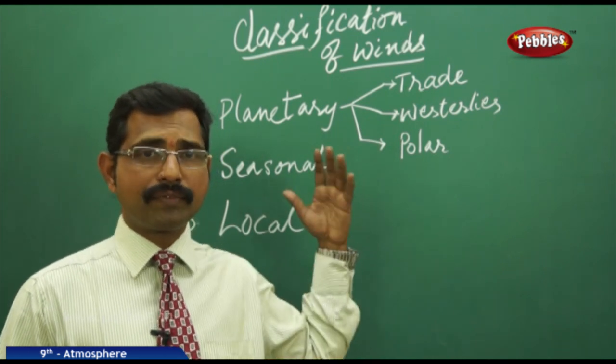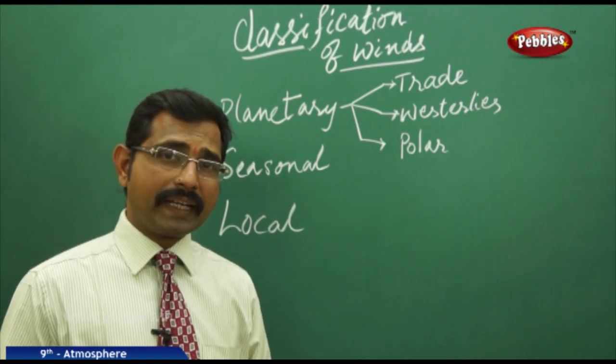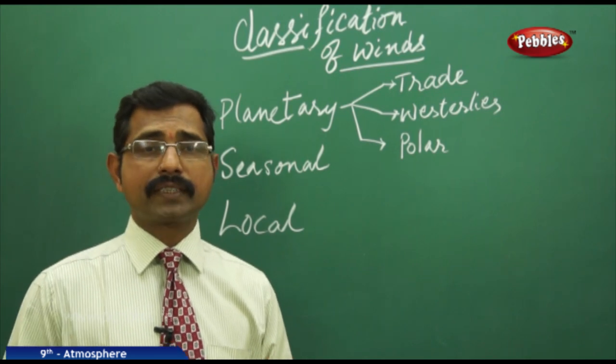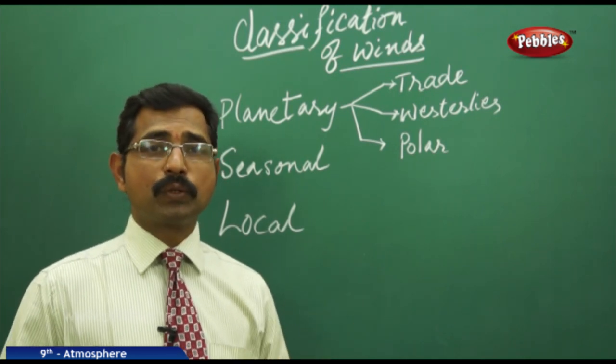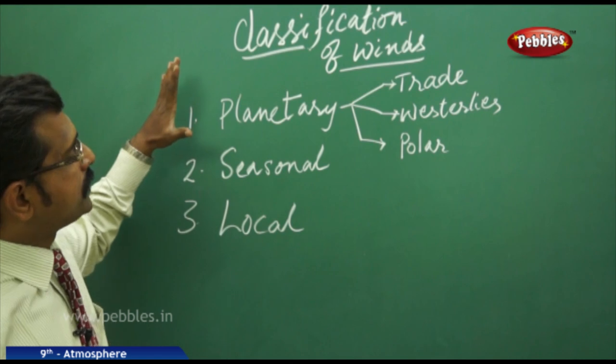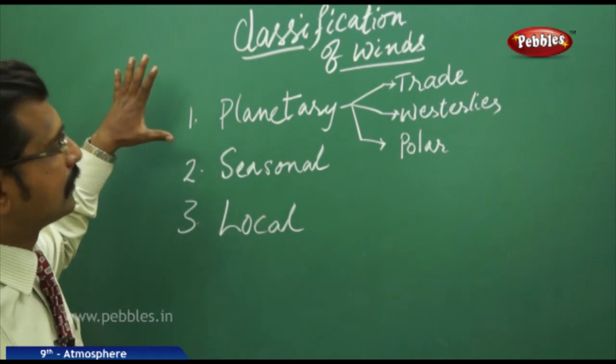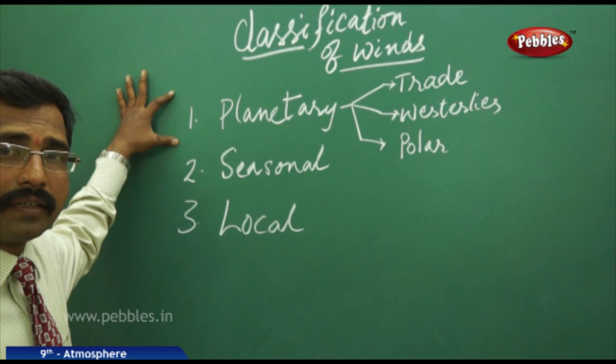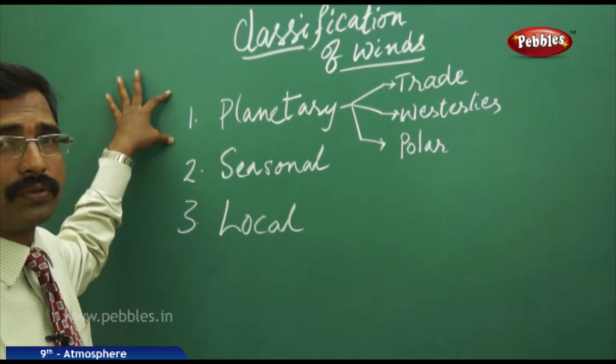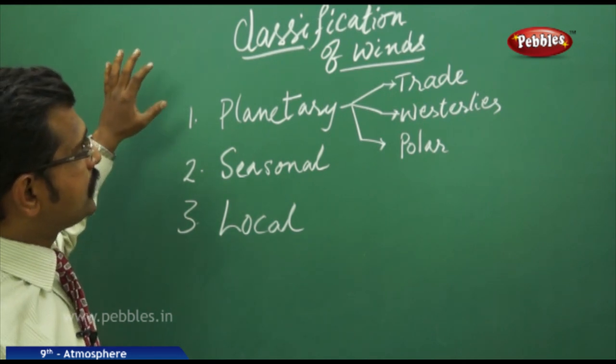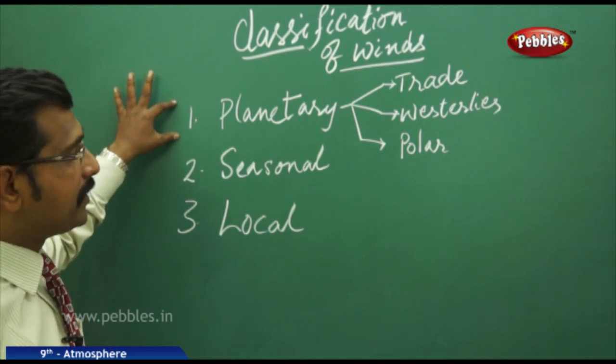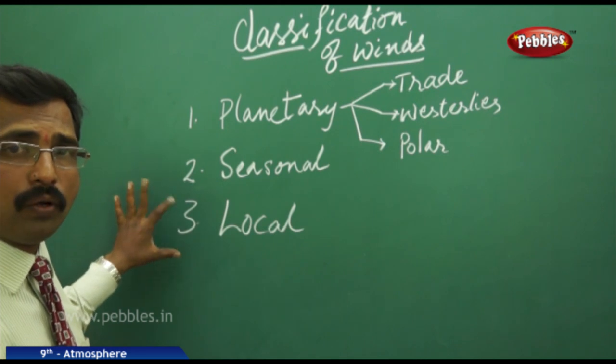Today we'll discuss the classification of winds, their exact features, and what direction they move from, as we have discussed, from high pressure to low pressure belts. Whether it is east to west or west to east. Wind has different speed, occurrence, and direction characteristics. Based on these four parameters, winds are majorly classified into three types: planetary, seasonal, and local winds.